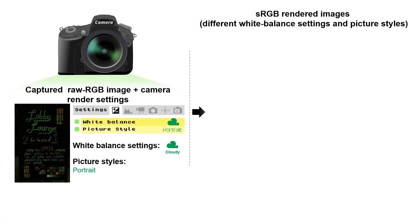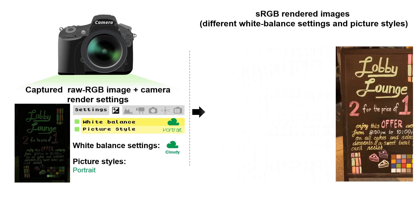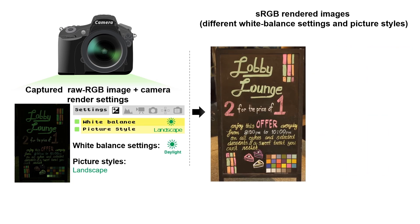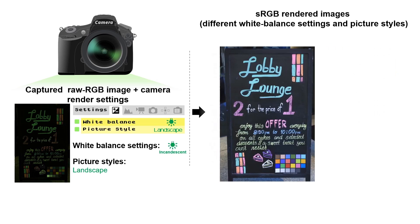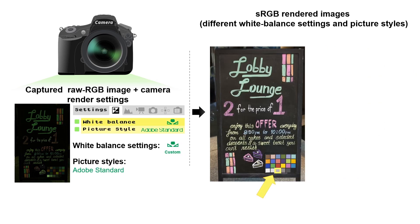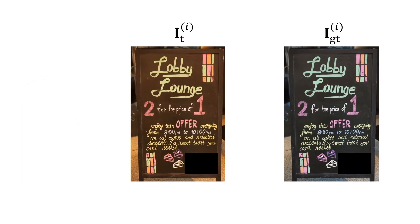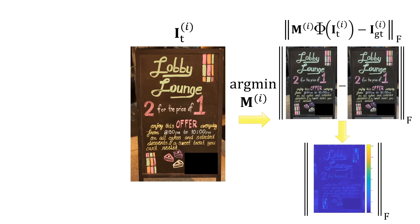We start by generating many examples of incorrectly white-balanced images. We do this for different white balance settings on the camera, as well as different picture styles. We also generate a ground-truth white balance image, where our white balance correction is based on a true achromatic patch placed in the scene. For each incorrect image in our training set, we generate a polynomial mapping function M that maps it to its ground-truth target.